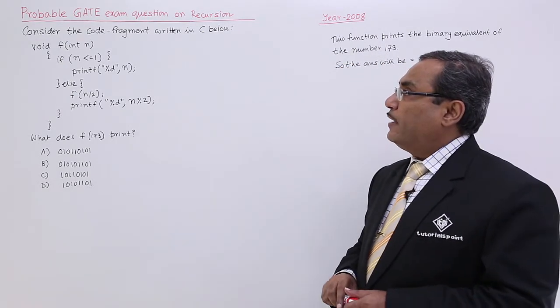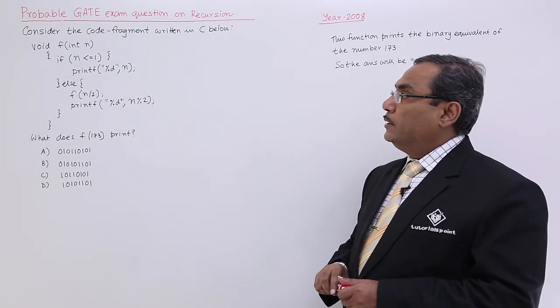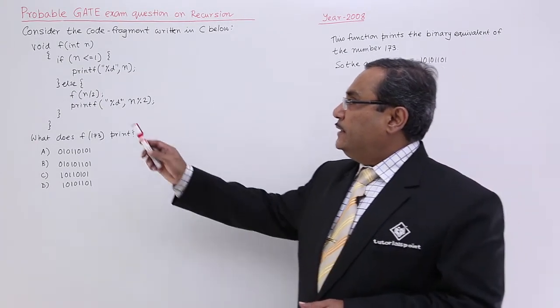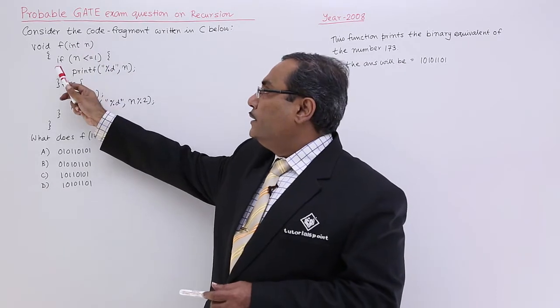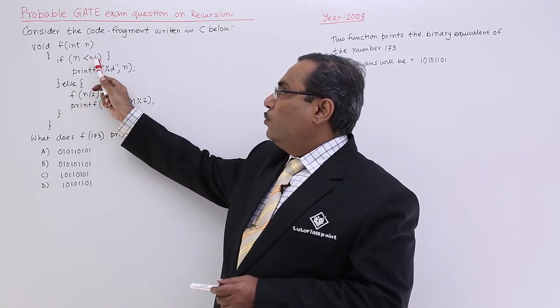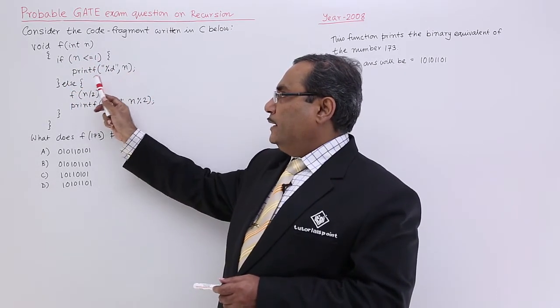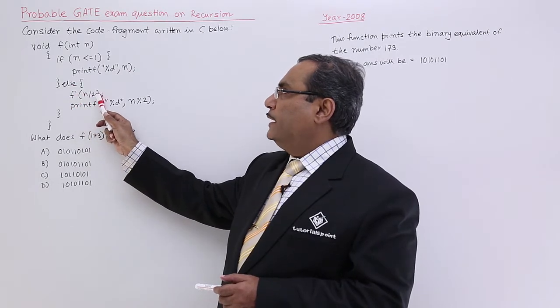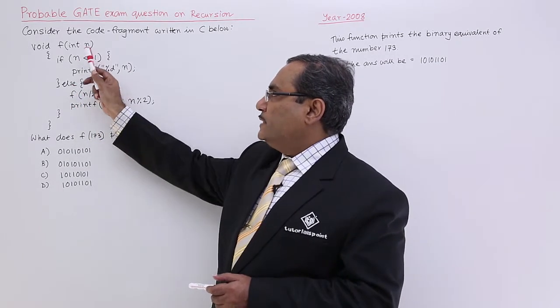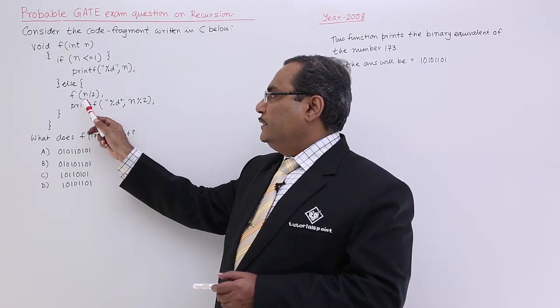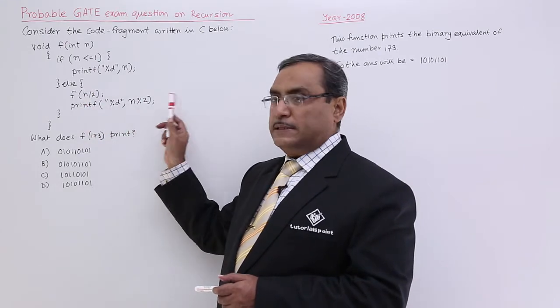Consider the code fragment written in C below: void f int n. So this is the input argument. If n is less than equal to 1 then print n else f n by 2. So again the recursive call is taking place here. And after returning back print n percentage 2.